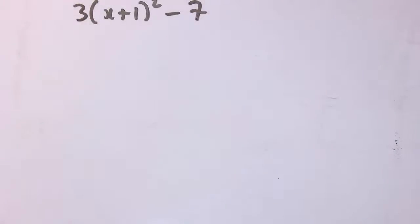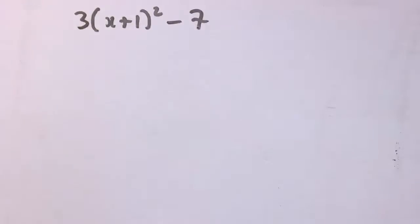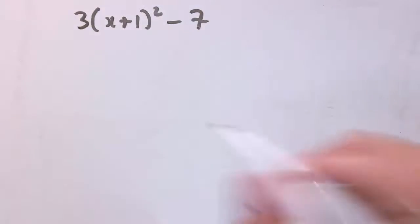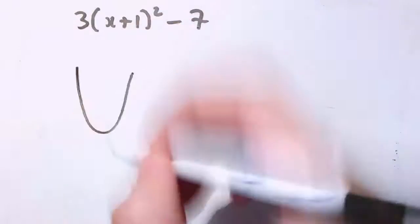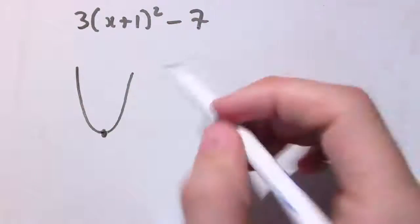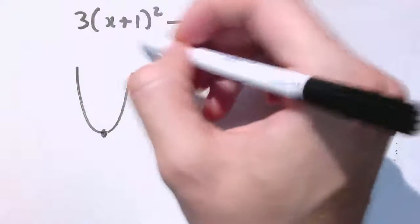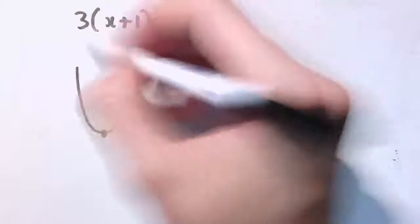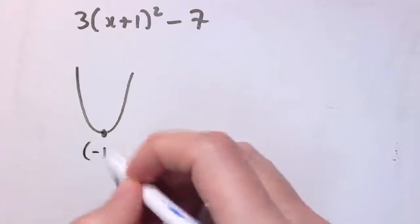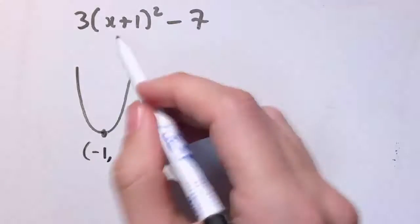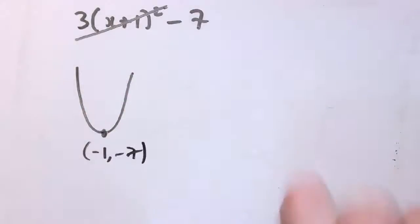For monic quadratics, if something is in completed square form it also allows us to very quickly see the minimum or maximum value. Here the minimum value — this is a positive quadratic with a plus x squared. The term x plus 1 squared is always positive or zero; the smallest it can be is 0, when x equals minus 1. When that term is 0, we're just left with minus 7. So the minimum point is at minus 1, minus 7.